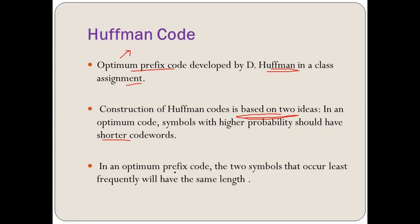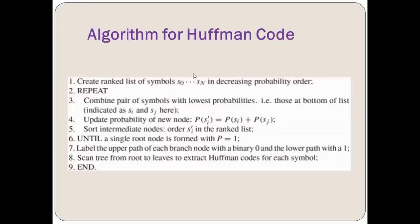In an optimum prefix code, the two symbols that occur least frequently will have the same length. Now let's see the algorithm for Huffman code and we will relate it to an example and solve it accordingly.